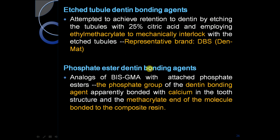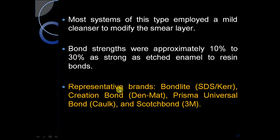Phosphate ester dentine bonding agents are analogs of BIS-GMA. With 25% citric acid, they bonded with the calcium in the tooth structure and the methacrylate end of the molecule bonded to composite resin. Most systems of this type employed a mild cleanser to modify the smear layer. Bond strength was approximately 10% to 30% as strong as the etch enamel-to-resin bonds.